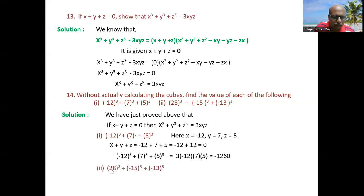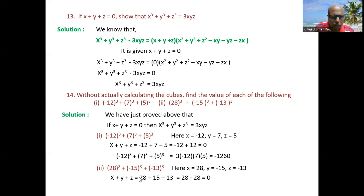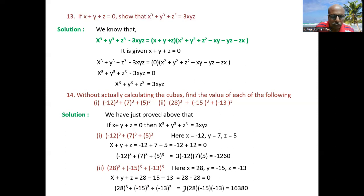Question 14(ii): x=28, y=-15, z=-13. Check: 28+(-15)+(-13) = 28-28 = 0. Since x+y+z=0, x³+y³+z³ = 3×28×(-15)×(-13). Minus×minus = plus, so the answer is positive: 16,380.